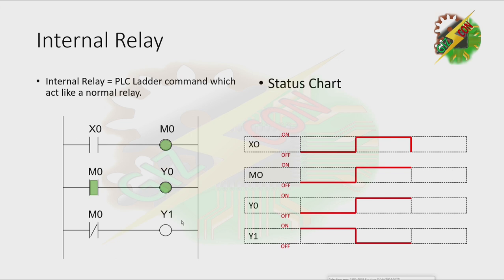Then when X0 is turned off, that will make M0 turn off also, and the contacts will go back to their normal position. This will cause Y0 to turn off and Y1 to turn on. That's how the internal relay works.